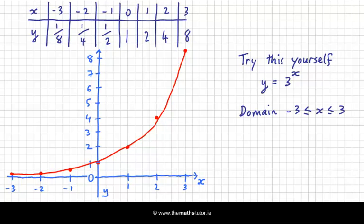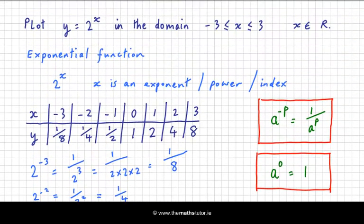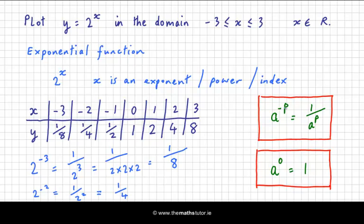And just remember the rules which I'm going to recap on now. When we have a minus power, a to the power of minus p is 1 over a to the p. And when we have any base to the power of 0, we get 1.